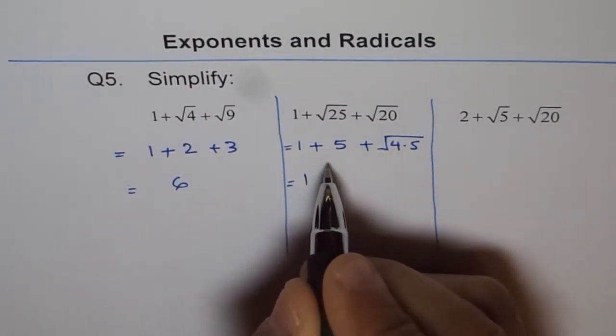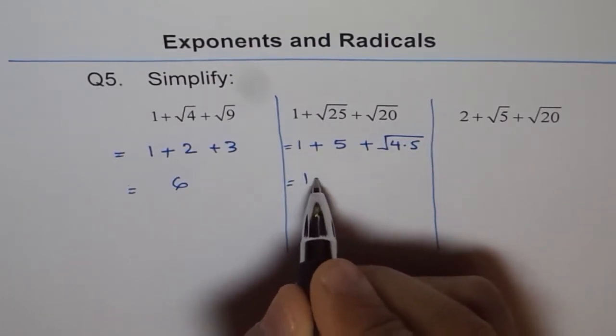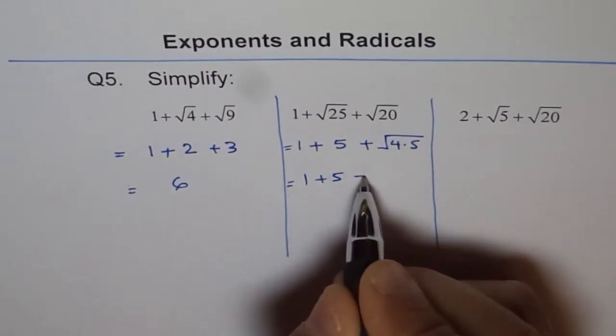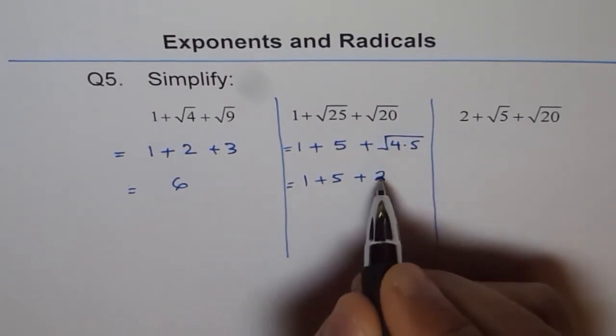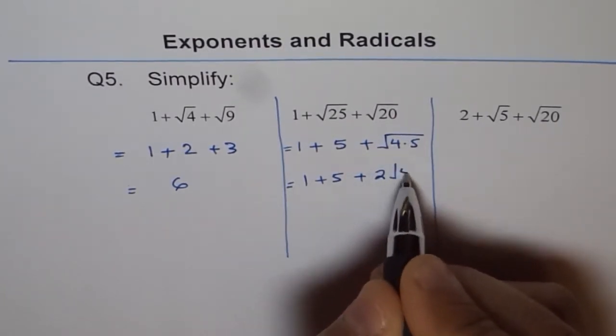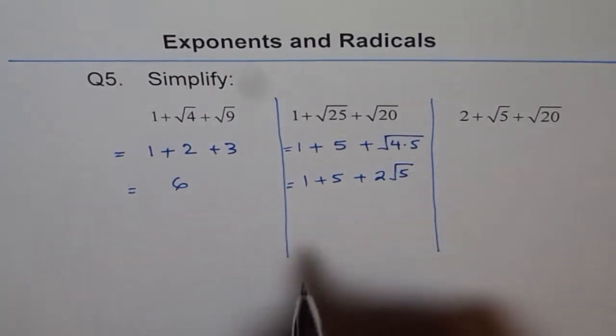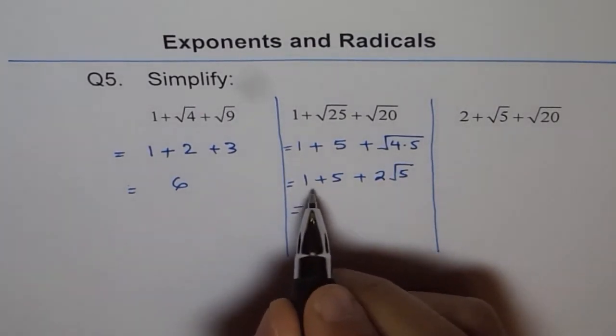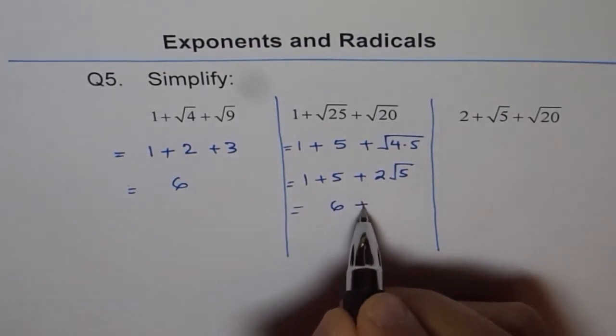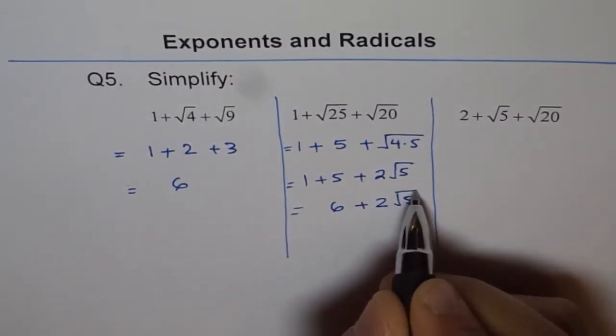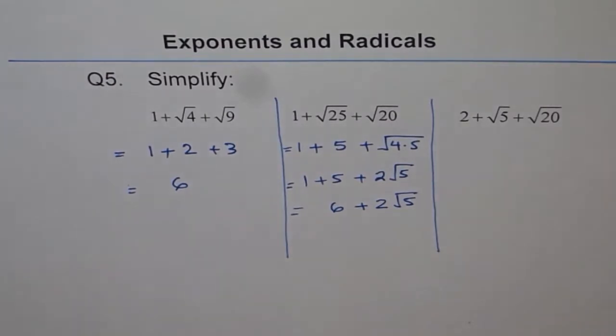So we get 1 plus 5 as 6. Let me write 1 plus 5 now, plus 4 could be written as 2 square. So I can take out 2. So we have 2 square root 5. Now we can simplify. We can add these two alike terms: 1 plus 5 is 6 plus 2 square root 5. So that is how we can simplify it.